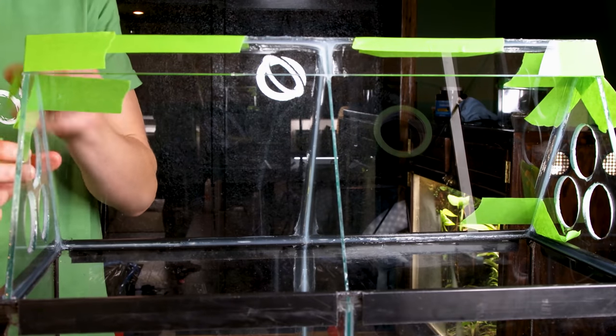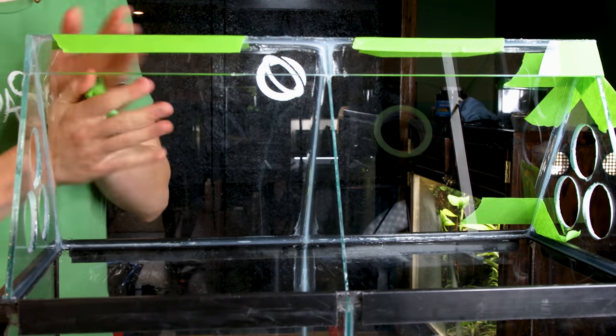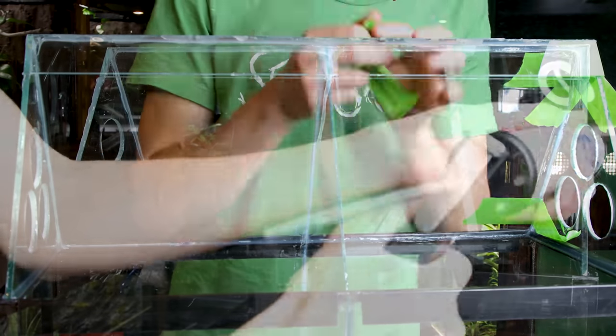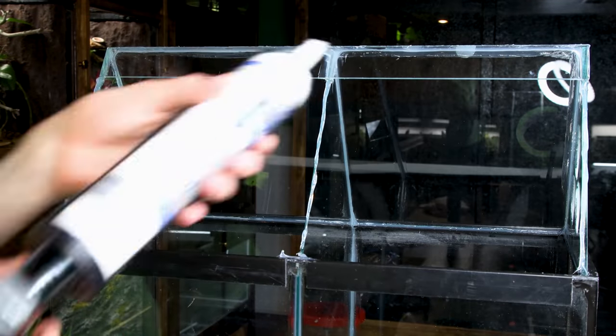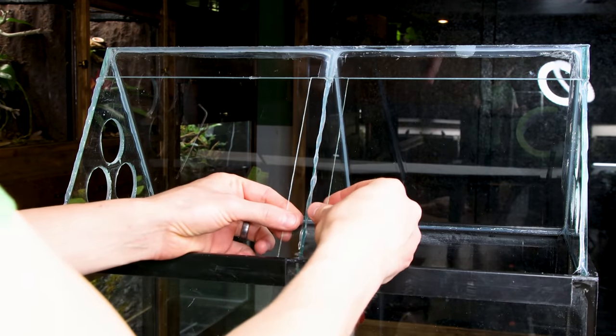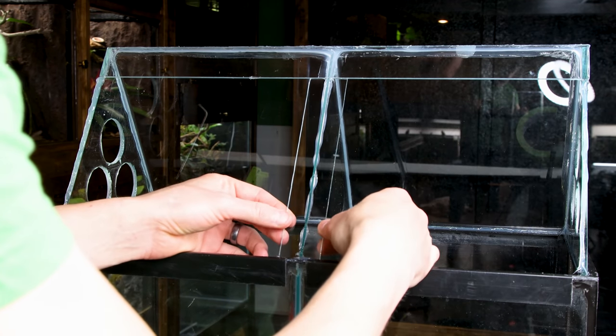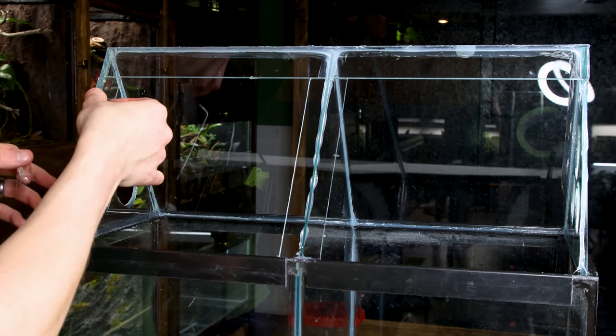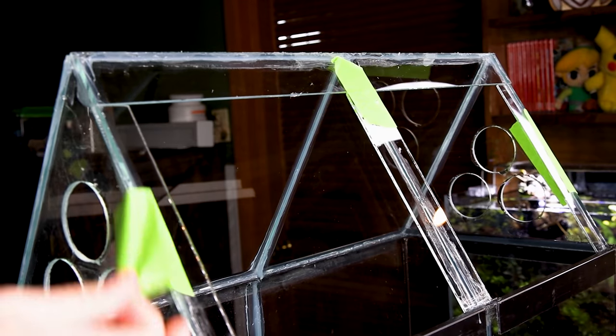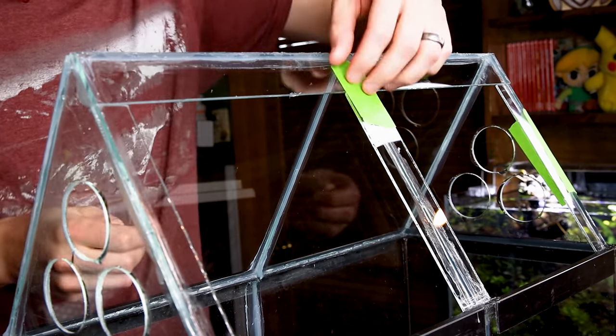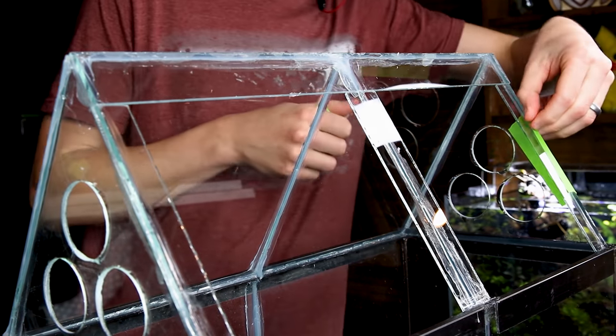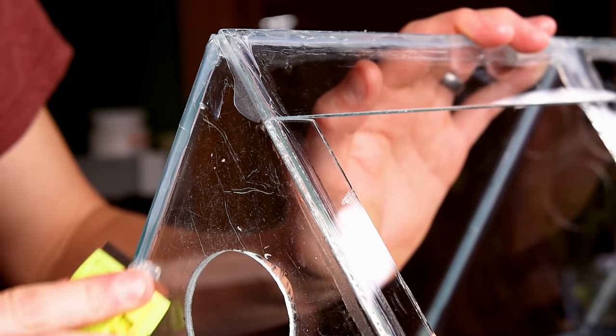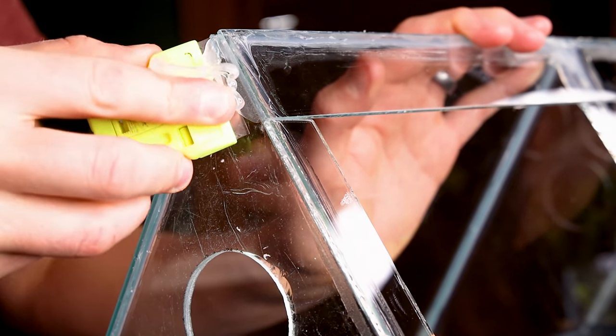I let it sit for a few hours while the silicone cured. I removed the anchoring tape. I added a few smaller pieces of glass to the front like before. I let the silicone cure overnight and removed the tape once more. I went back and removed the excess silicone with a razor scraper.